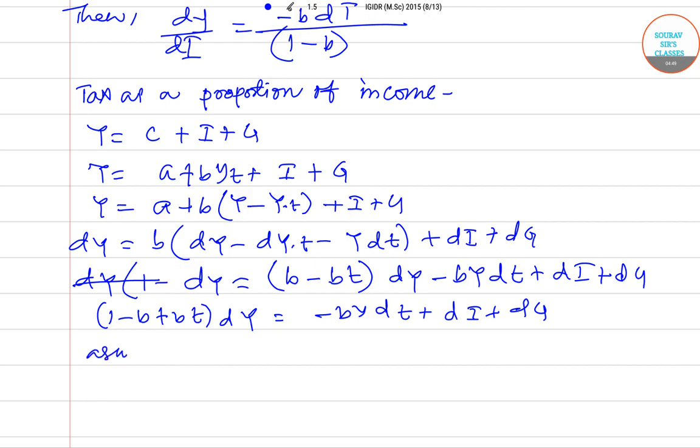Now assuming balanced budget, so dT equals dG for balanced budget. Therefore we have I equals I bar, so dI equal to 0.